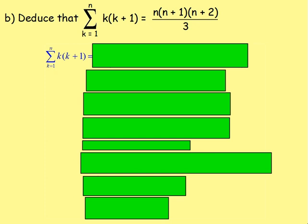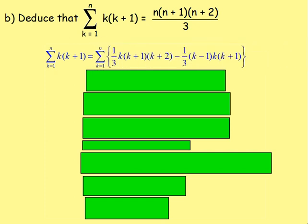Part B: deduce that the sum of k(k+1) from k equals 1 all the way up to n is equal to n(n+1)(n+2) all over 3. If we want the sum of k(k+1) from 1 up to n, we know from Part A that k(k+1) equals one third k(k+1)(k+2) minus one third (k-1)k(k+1). So let's substitute that in — we still want the sum going from k equals 1 all the way up to n.